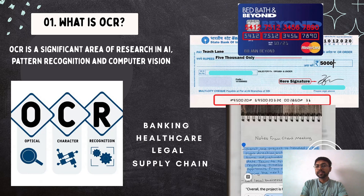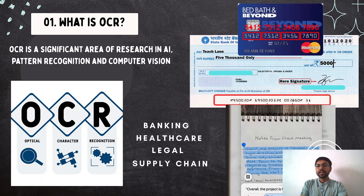The third example is Google Lens. You just scan an article using your mobile and it will extract the text, which you can further use for searching or translating it to any other language. There are various applications of OCR across multiple domains like banking, healthcare, legal, and supply chain.